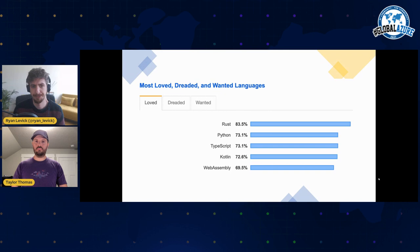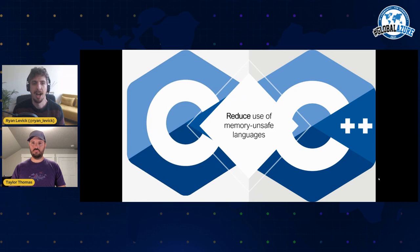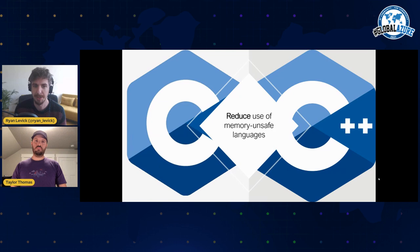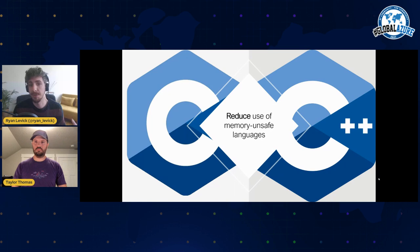Really at the core of this is that we want to reduce the use of memory-unsafe languages like C and C++ through the use of Rust. C and C++ are here to stay — there's just far too much software written in them. I'm not proposing that we completely stop writing C++ or that we just rewrite everything in Rust, because that's simply impractical and far too costly. It's really about reducing our dependence on these memory-unsafe languages and instead relying on a safe language for the most critical systems that we have.